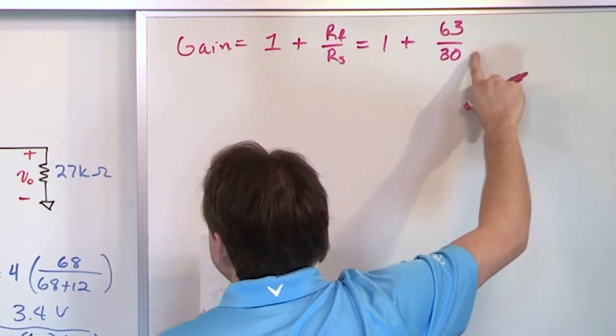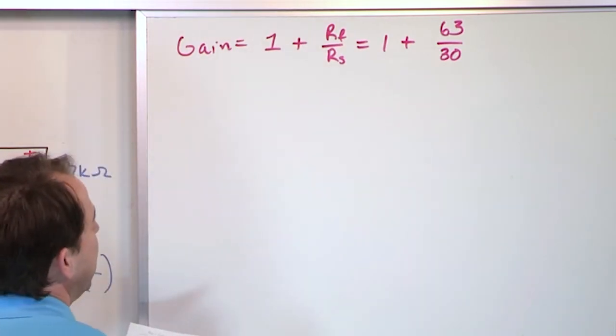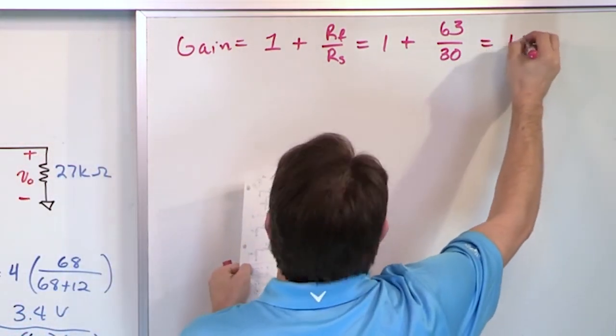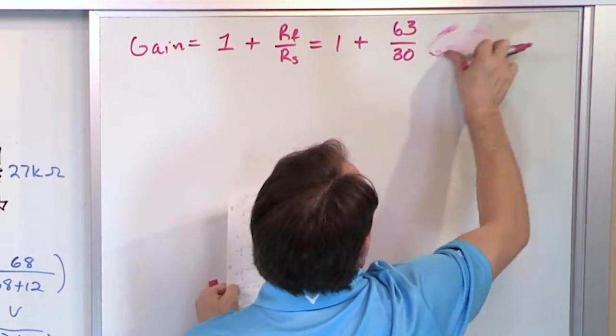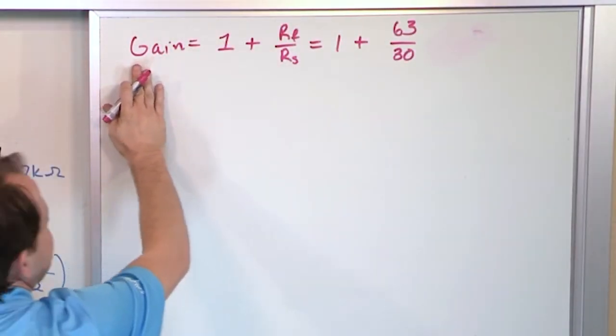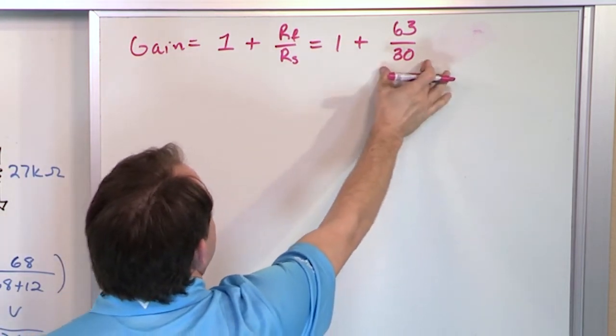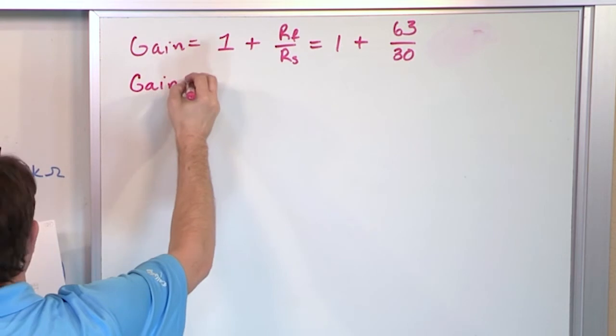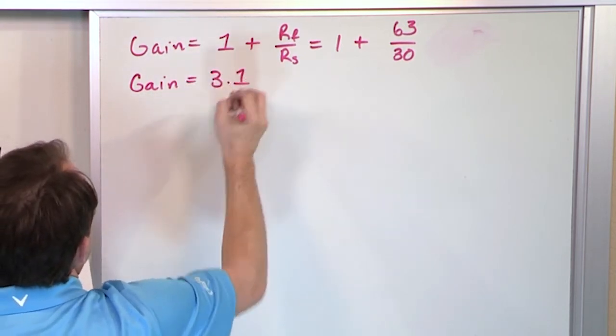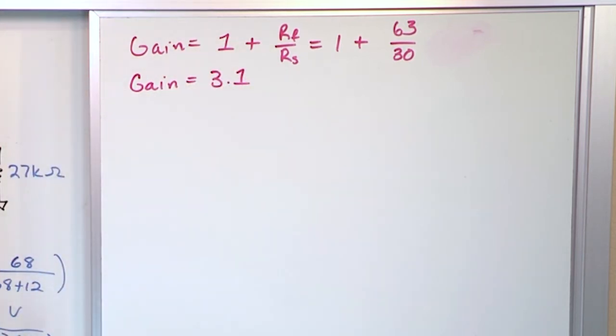Again, it's 63,000 and 30,000, all of those divide away. So what you end up with is 1 plus, well, you know what, let's just do it this way. All right, so we're going to calculate the gain. It's going to be 1 plus the fraction 63 over 30. So what we're going to get is a gain of 3.1. That's the gain of this non-inverted configuration.